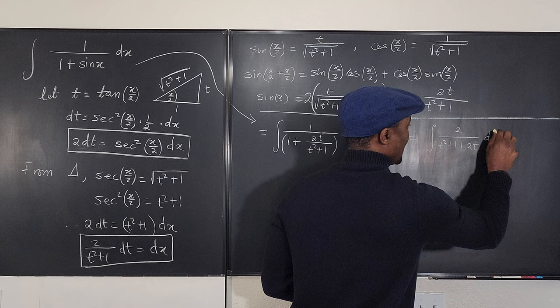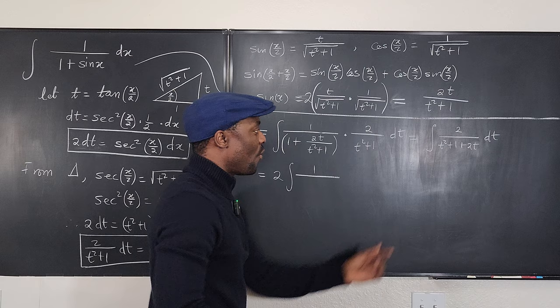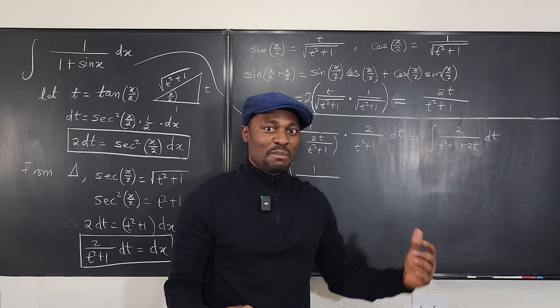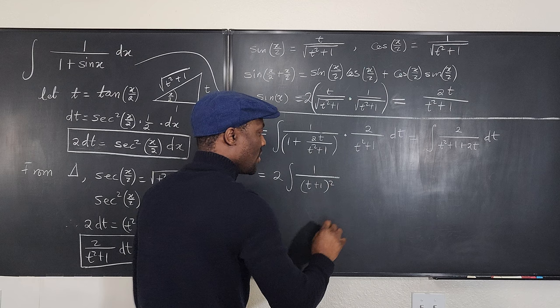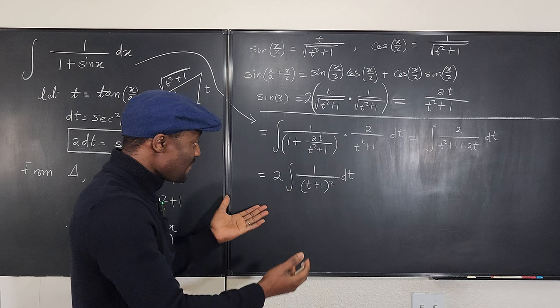Pulling the 2 out, this becomes 2 times the integral of 1 over t squared plus 2t plus 1 dt. And t squared plus 2t plus 1 is a perfect square: it's (t + 1) squared. You will always get this when you make this substitution, so you can always integrate.